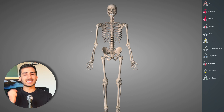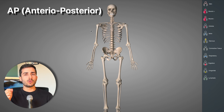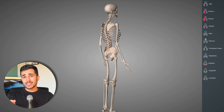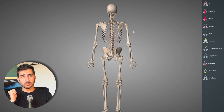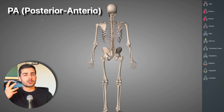If a patient is facing the x-ray tube and their back is against the bucky, the patient is in the AP or anterior-posterior view. And if conversely they're facing the bucky and their back is against the tube, then they're in the PA or posterior-anterior position. Essentially, if the patient is facing you they're AP, and if they're not facing you, they're PA.